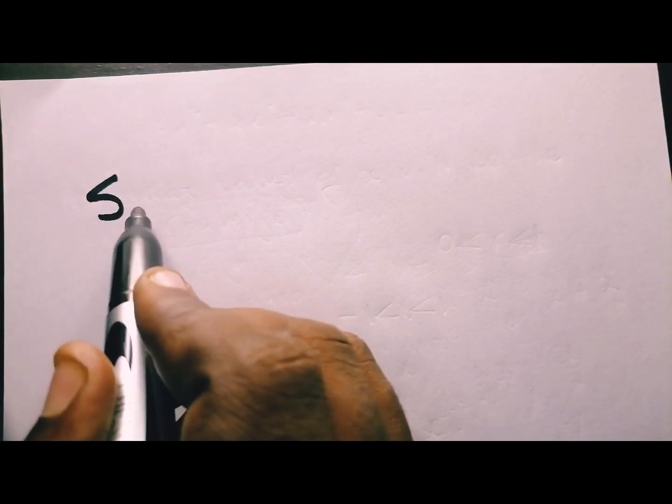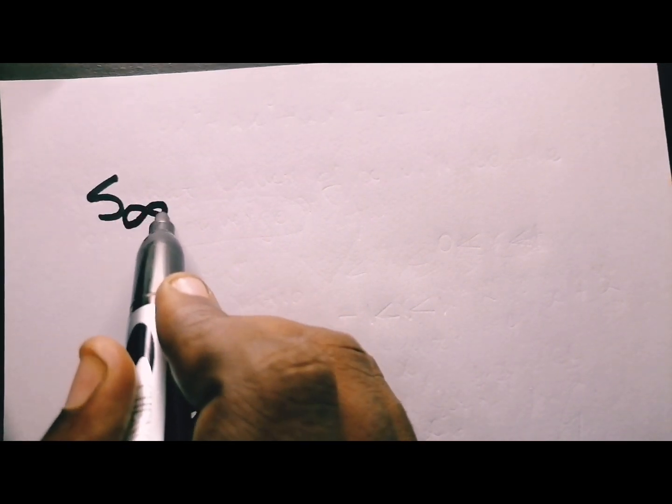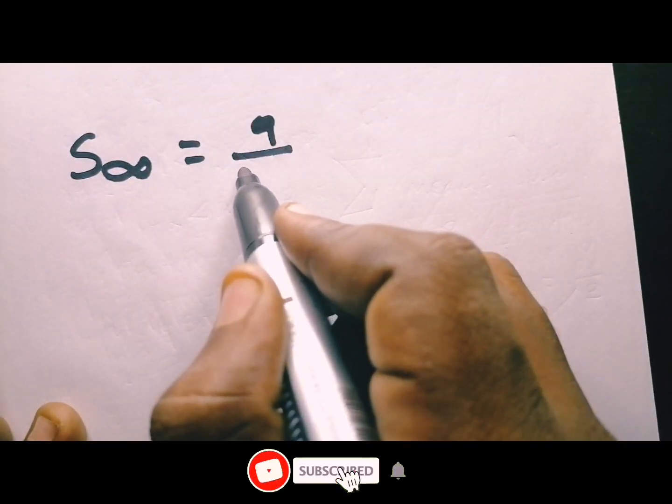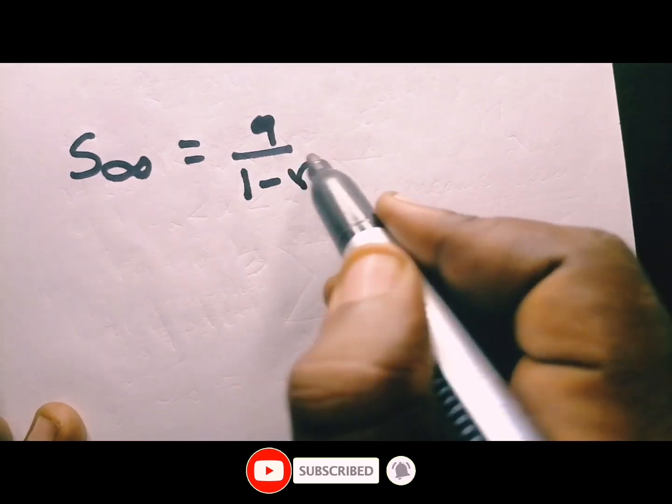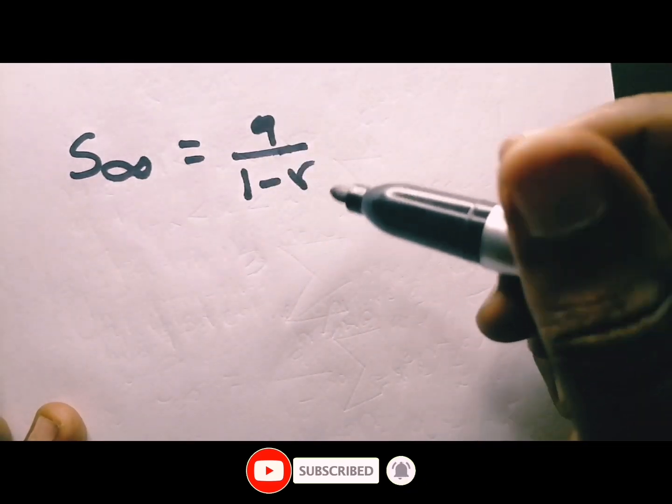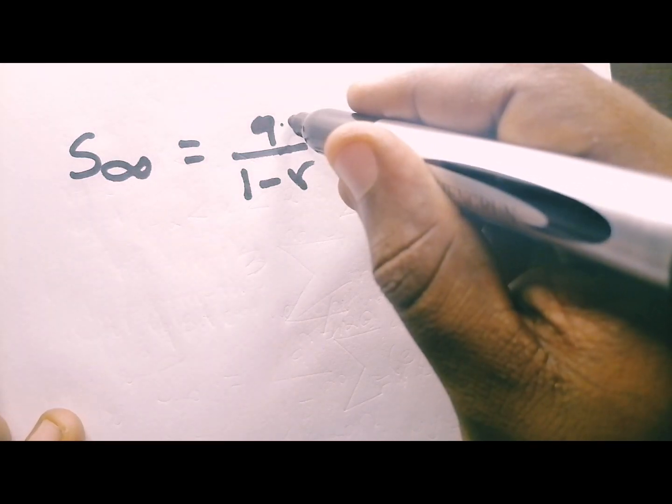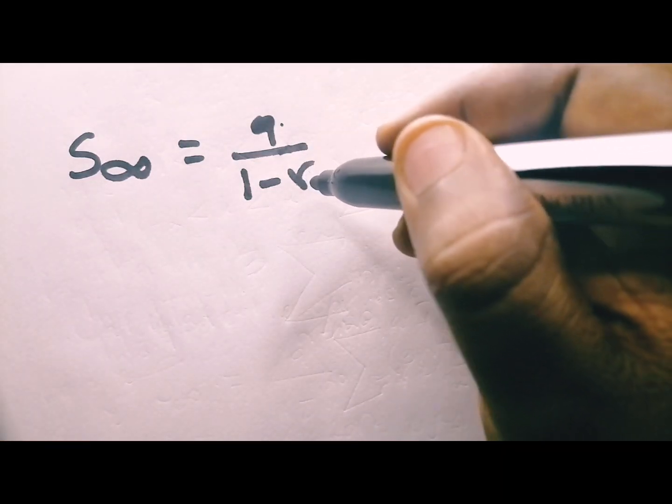3.2 says, if x is equal to 1, calculate the sum to infinity. Let's go to the formula. Because the formula will tell you what do you need. We have sum infinity equal to a over 1 minus r. Which means you only need a and r. A is the first term and r is the constant ratio.